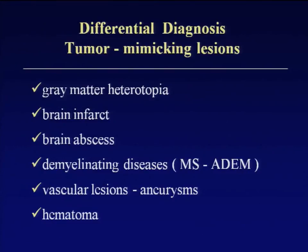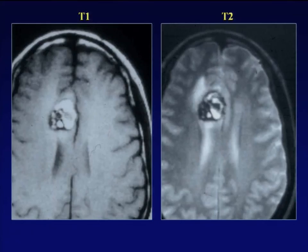Sometimes non-neoplastic lesions — such as heterotopias, infarctions, abscesses, MS, vascular lesions, and hematomas — produce images similar to tumors and we have to differentiate them. A quite typical T1 and T2 weighted image showing a popcorn appearance — very bright on T2 with inhomogeneous signal — is of course a cavernous angioma, a quite benign lesion.